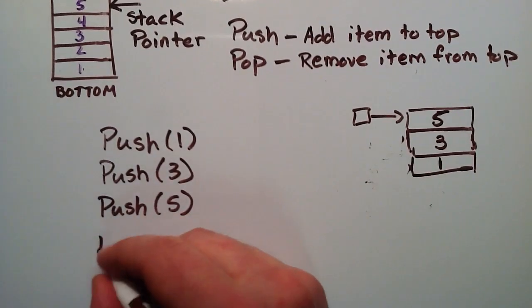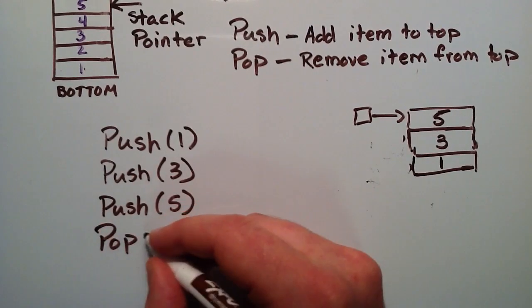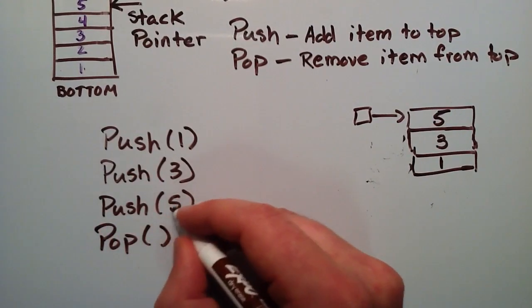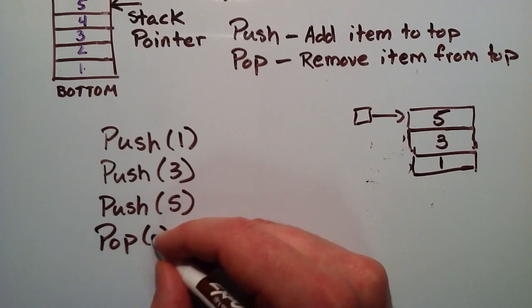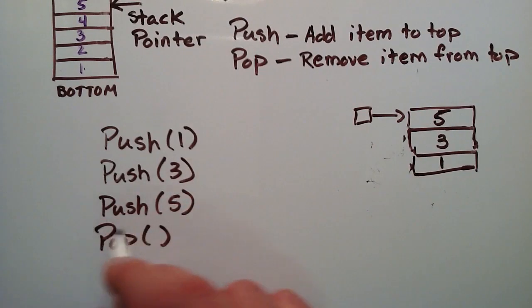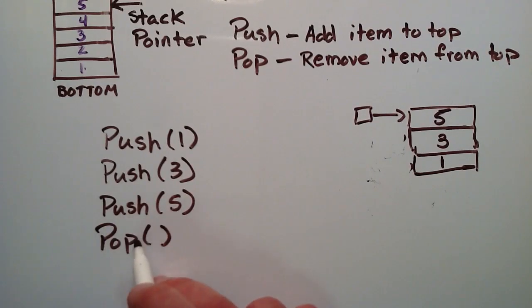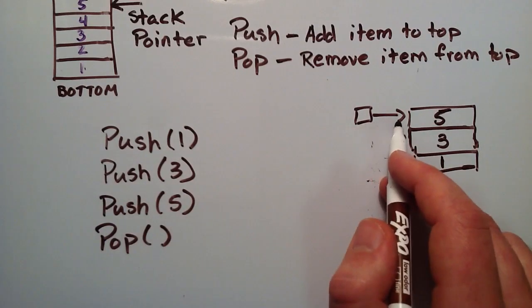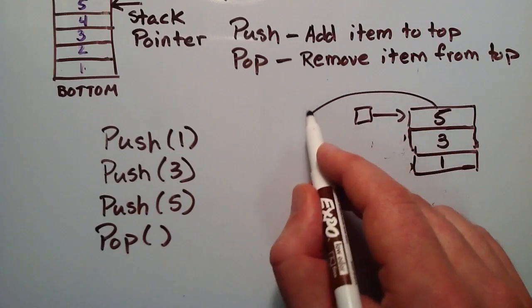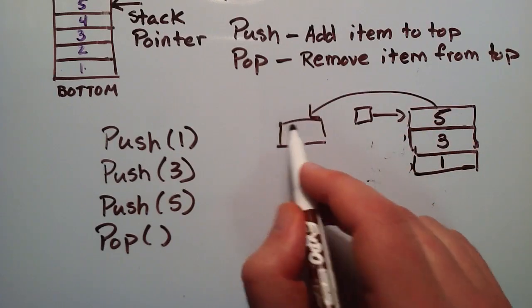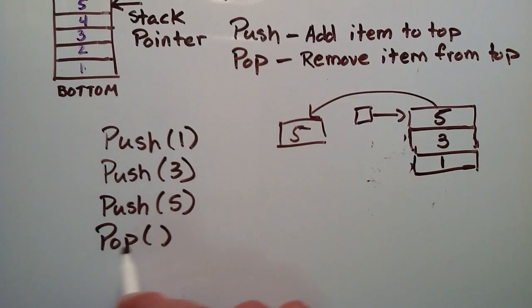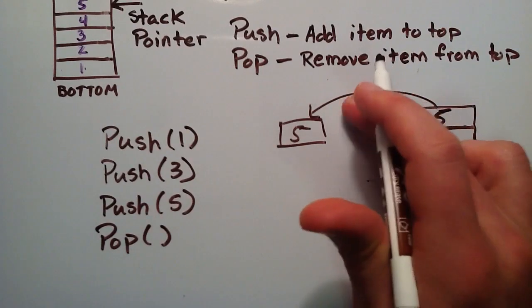What happens if we use the pop command? If we did pop, we wouldn't put anything in the parentheses here. We wouldn't be placing any argument in. We would basically be returning a value and so, if we were to just do pop at this point, what it would do is it would go find the stack pointer, it would remove the number 5 and put it somewhere depending on how we wrote our pop function.